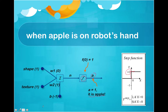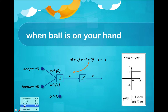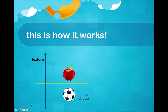What if the ball is in the robot's hand? The shape is 1 but the texture is 0 because it's not smooth. So 1 times 0 is 0, 0 times 1 is 0, minus 1, so the net input is minus 1. Minus 1 goes to the activation function and returns 0. Output 0 means ball, so the robot predicts ball perfectly.